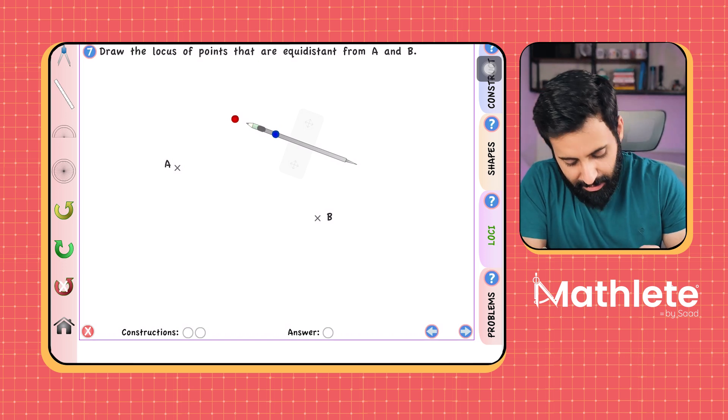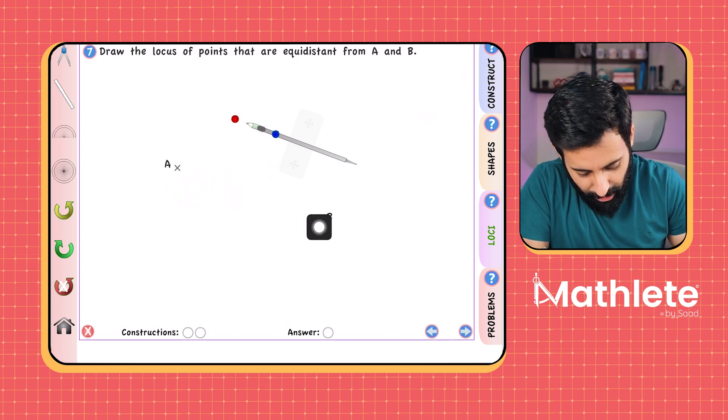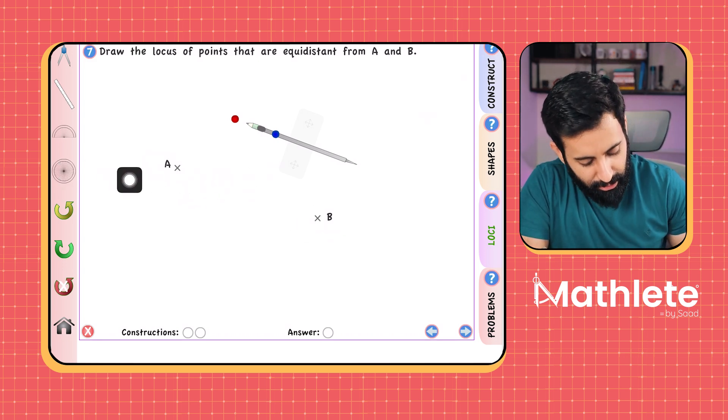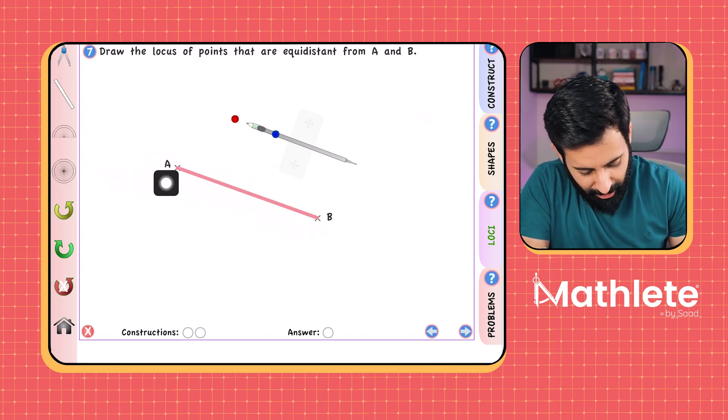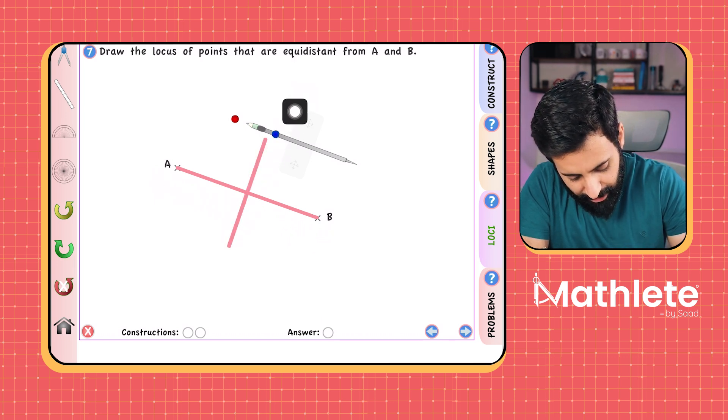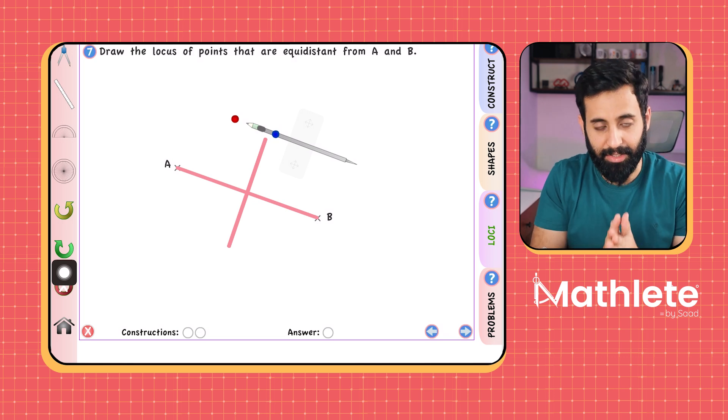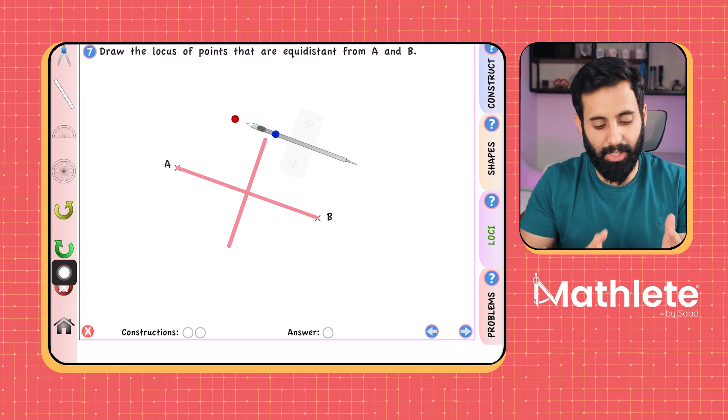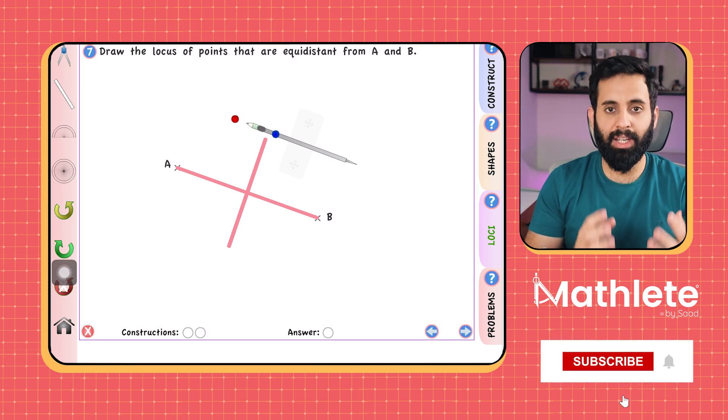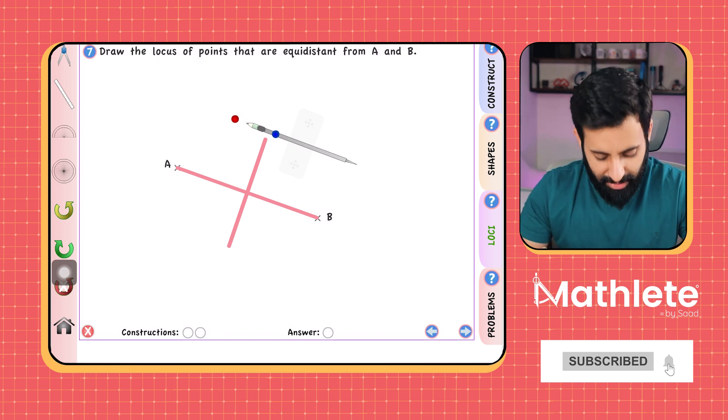So before we actually draw it, let's imagine what the perpendicular bisector of A and B will actually be like. So imagine that A and B are joined by a straight line. And then imagine that there's a line which is perpendicular to line AB and it's passing from the center, meaning passing from the midpoint of A and B. So that is what the end goal is. So in the end, we can expect something like that.